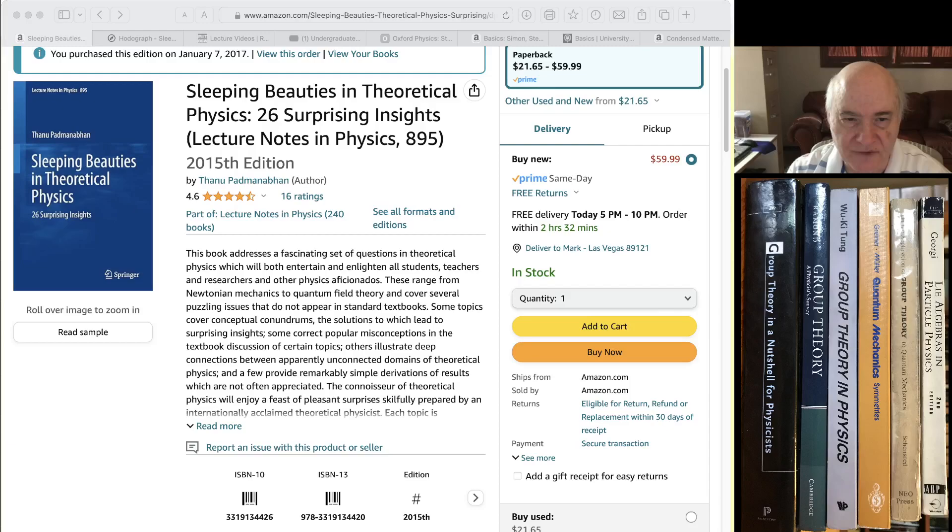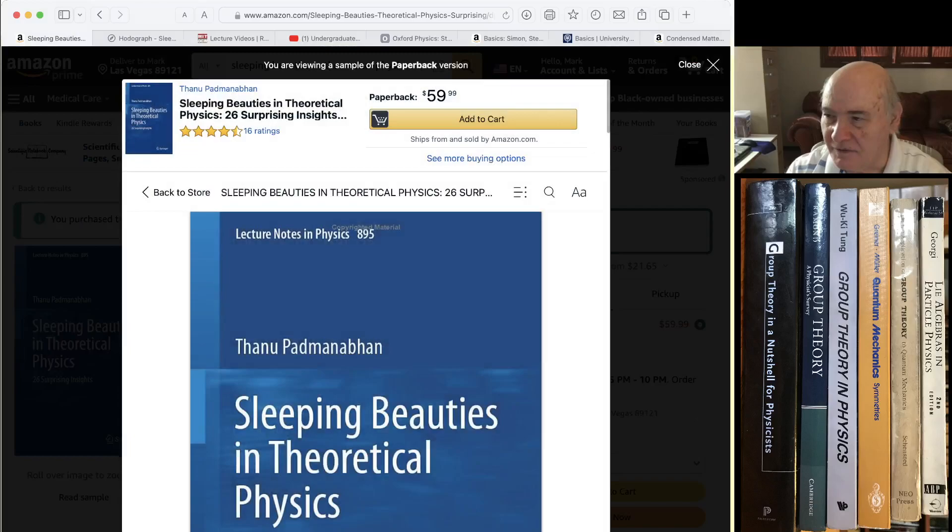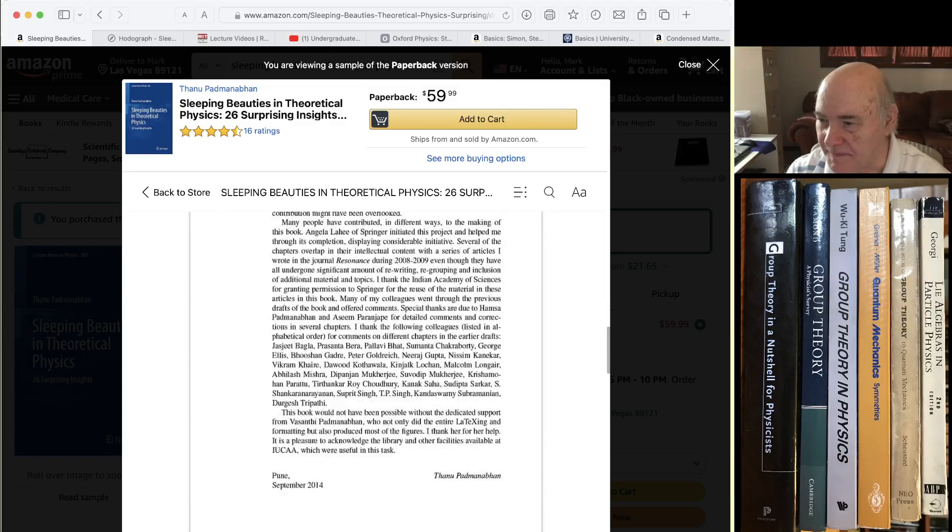If you look at the table of contents, the book starts out. The first real chapter is orbits of planets or circles. I went through this whole chapter and verified every equation. It's really like a nice introduction to the inverse square law and everything.